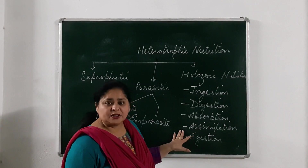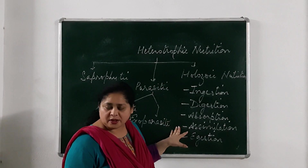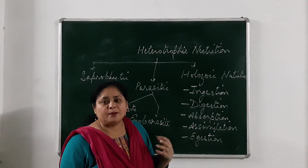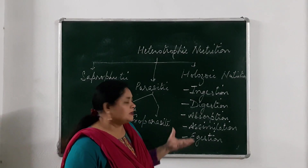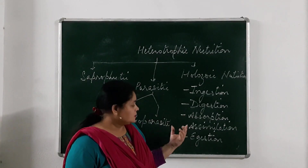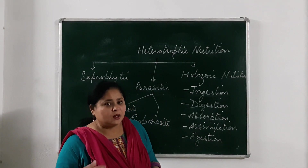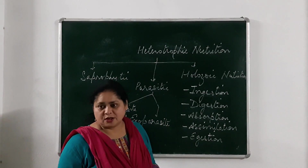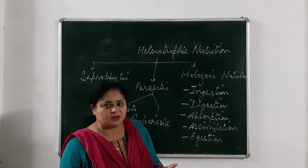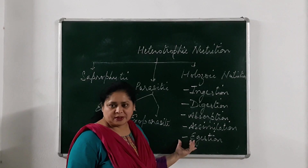Then assimilation means the utilization of the absorbed, diffusible food for the production of protoplasm — our living matter. That protoplasm is formed with the help of the absorbed digested food. Now, not all the food we take is converted into diffusible form. Some part of it is left over, and this leftover part is thrown out of the body. This step is known as egestion.